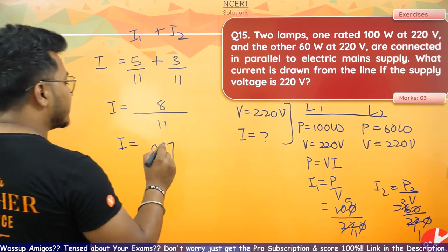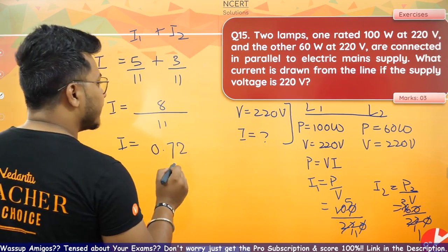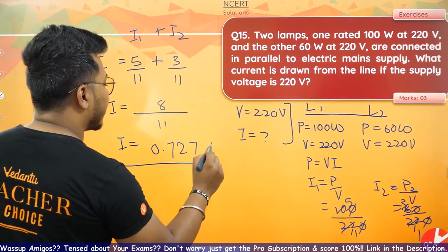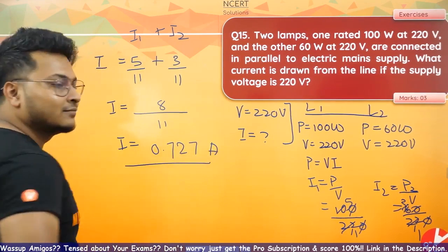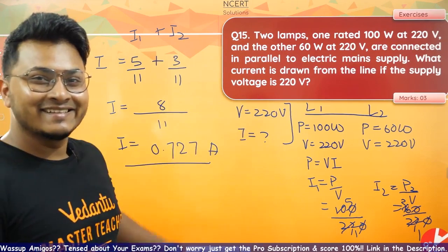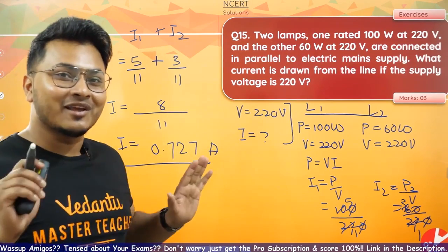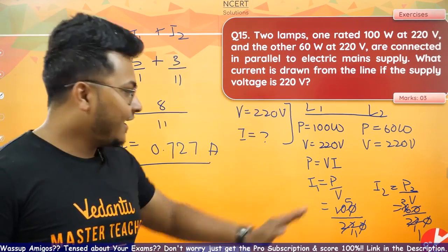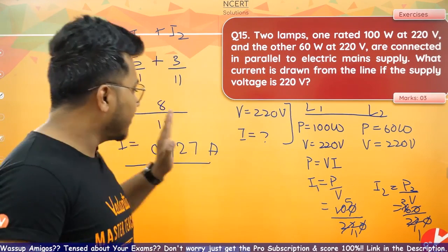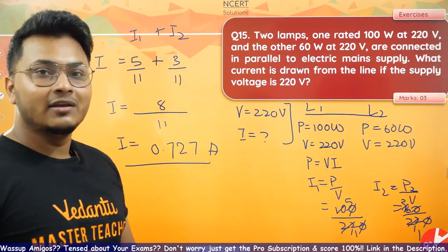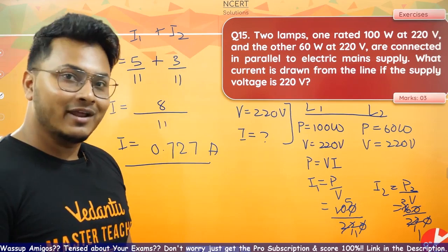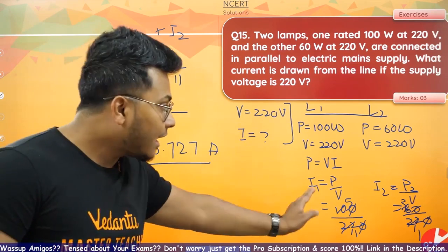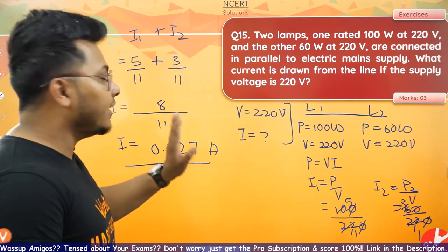So I = 8/11, which is approximately 0.7272, about 0.727 amperes. That is your answer for question 15. That's 1 mark, 3 marks — correct.